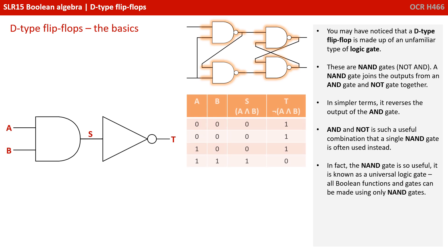You may have noticed that a D-type flip-flop is made up of an unfamiliar type of logic gate. These are NAND gates, not AND. A NAND gate joins the output from an AND gate and a NOT gate together. In simpler terms, it reverses the output of the AND gate.